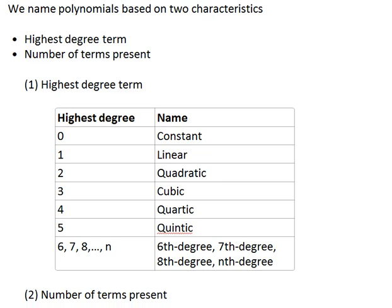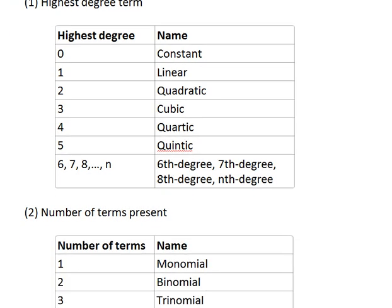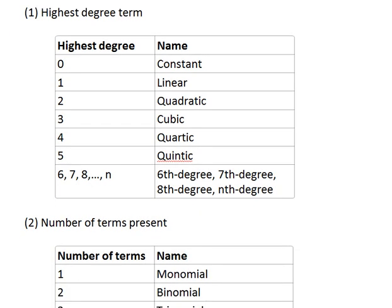Okay, so ordering based on highest degree term. If we only have a constant term, for example, 6. 6 is considered a polynomial. It's called a constant polynomial.